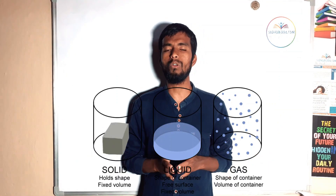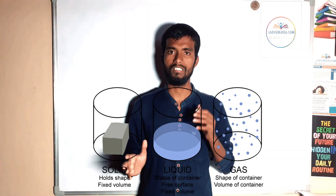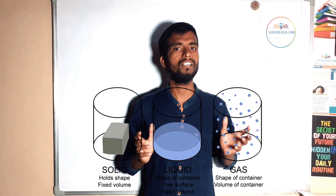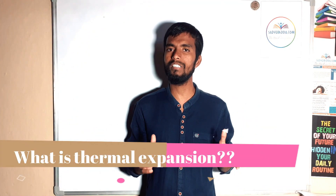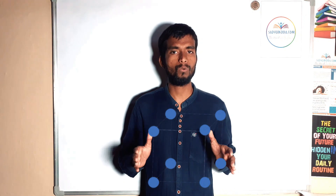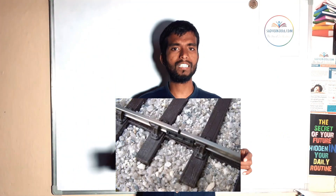Here we are discussing thermal expansion, which means that the change in length delta L is due to heat. All three states of matter — solid, liquid, and gaseous — expand when they are heated. Thermal expansion depends upon the molecular theory of atoms. For easy understanding, forces between neighboring atoms can be assumed as springs, which are easier to expand than to compress. These atoms are always in a vibrating state. When heat is supplied to a solid, the vibration of atoms increases and the distance between these atoms also increases, resulting in the expansion of the solid.